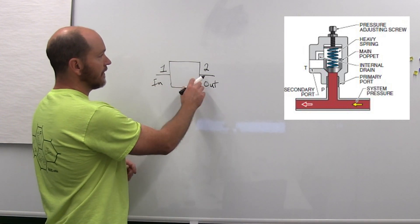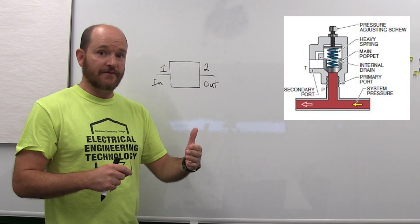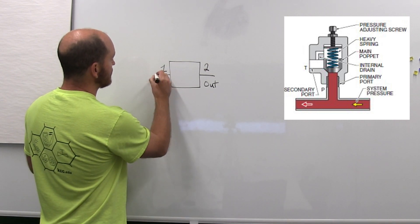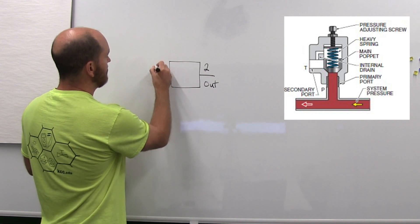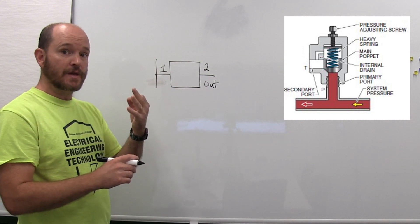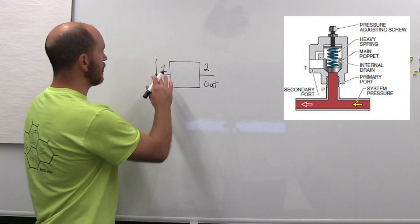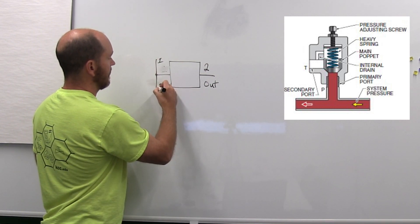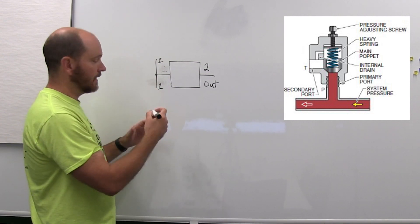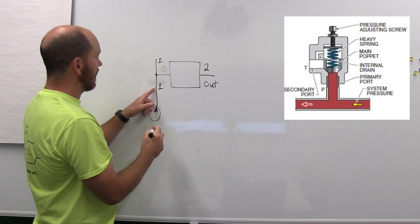Not all but many pressure relief valves have two number ones, meaning that there's actually a T built in to the valve itself. So they'll have three ports: a number two port which we'll talk about in a second, and then two number ones.